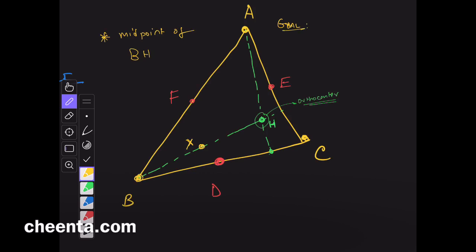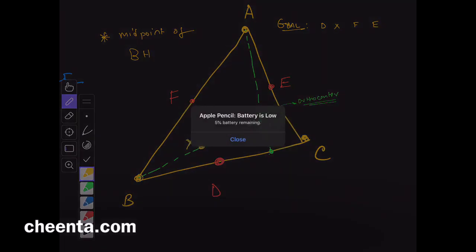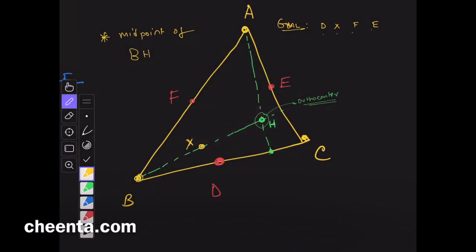Our goal is to show that D, X, F, E lie on the same circle. Now, there is a fancy word for this. It's known as concyclic. So, how do we show that a single circle will pass through all of these four points? I mean, we can roughly draw the circle in the picture. How do we show that they all lie in the same circle?